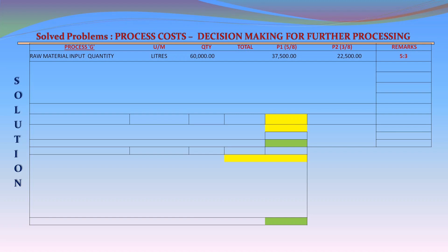Cost of raw material — Total value: £381,000. P1 in the ratio of 5/8: £238,125. P2 in the ratio of 3/8: £142,875.